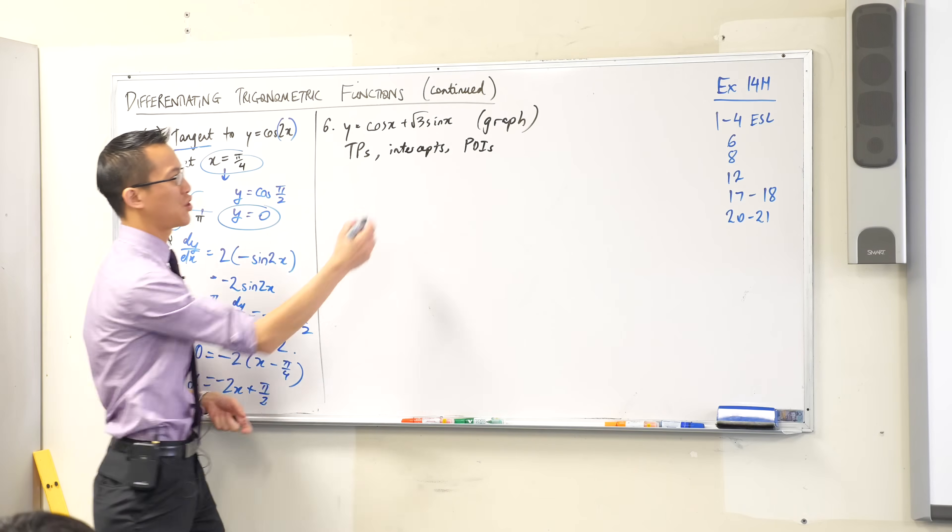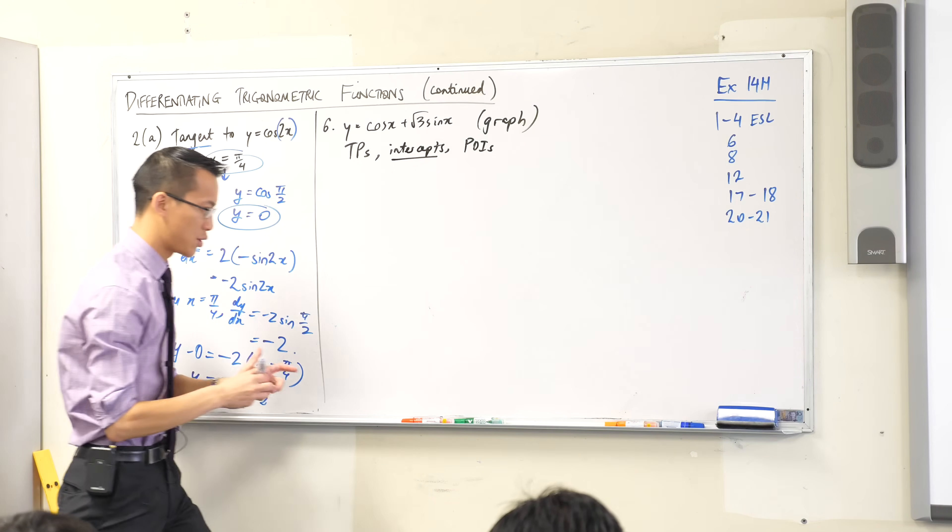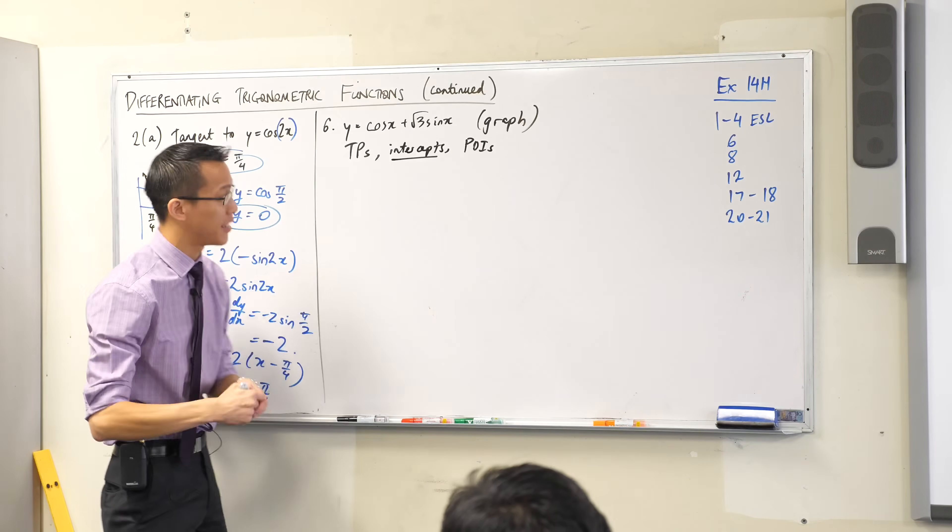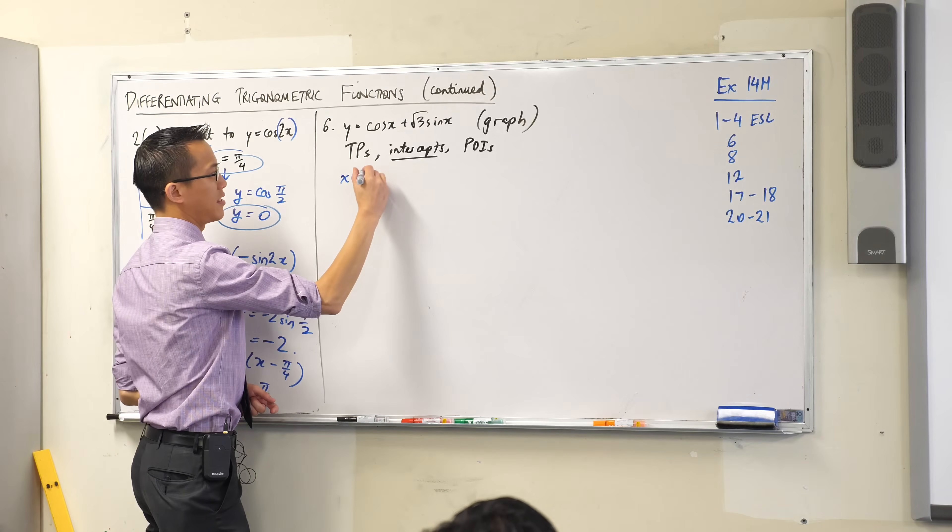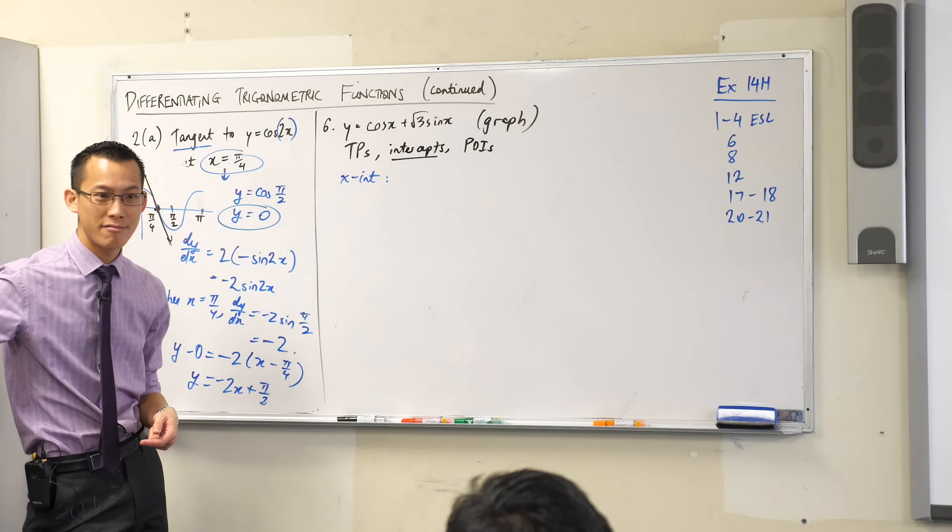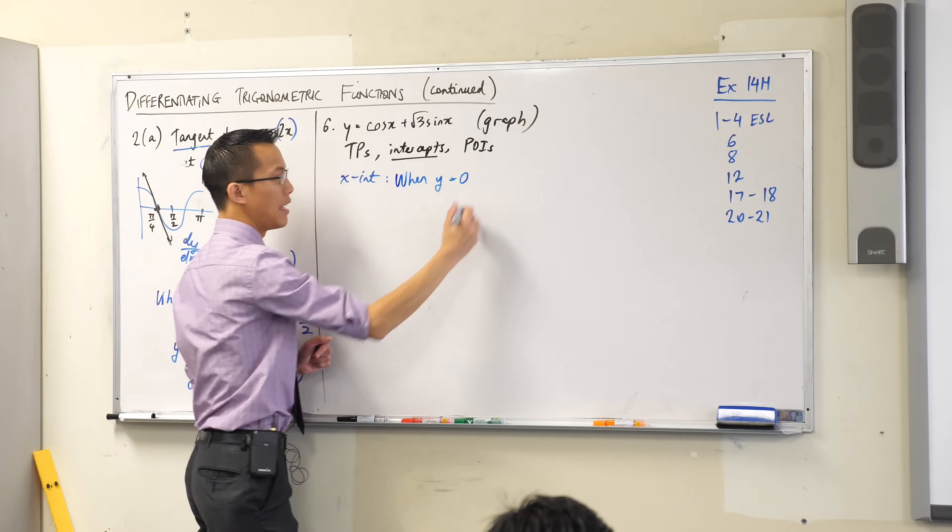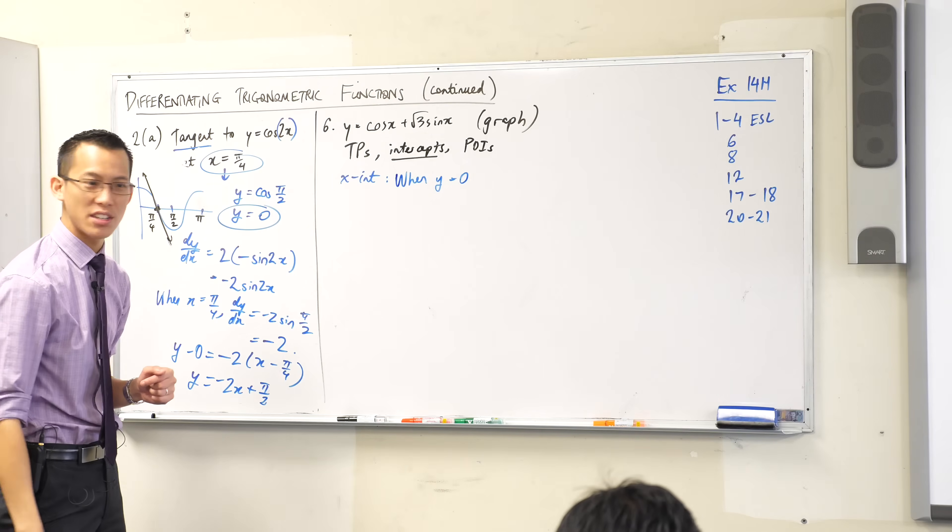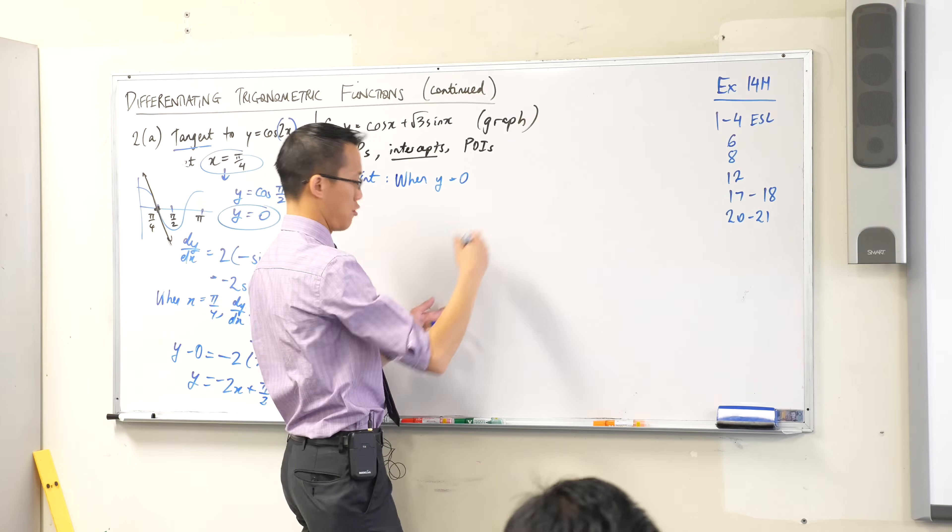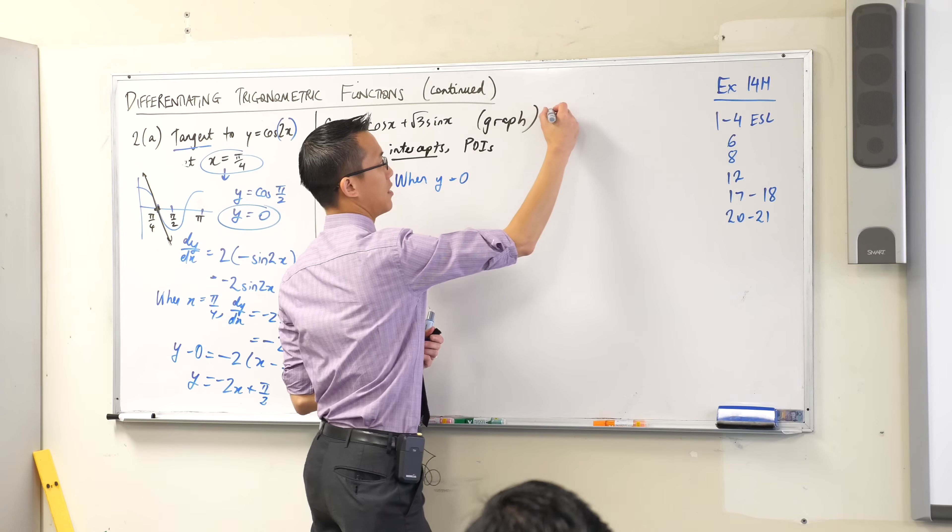I'm actually gonna suggest we start out working intercepts because you don't need calculus for that, do you? Okay, so to begin let's do x-intercepts. X-intercepts occur when y equals 0. Can you go ahead and work out what the x-intercepts are? Let's go from 0 to 2π. That's probably the domain, right? 0 to 2π.